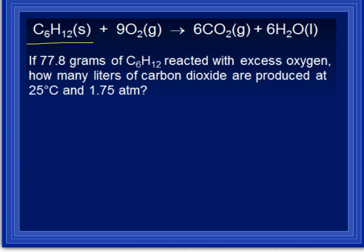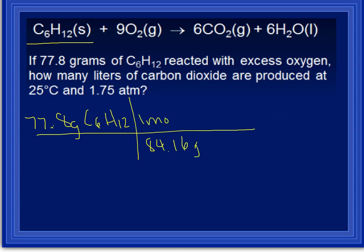So the first thing we need to do is some stoichiometry and change the 77.8 grams of C6H12 to moles of carbon dioxide. We only want to go to moles, not to grams, because we're going to use PV equals nRT. So first we want to convert these grams to moles, add up the mass of C6H12, which happens to be 84.16 grams in one mole of C6H12.